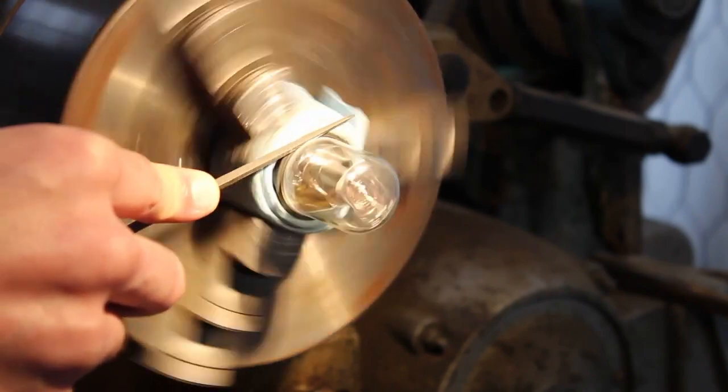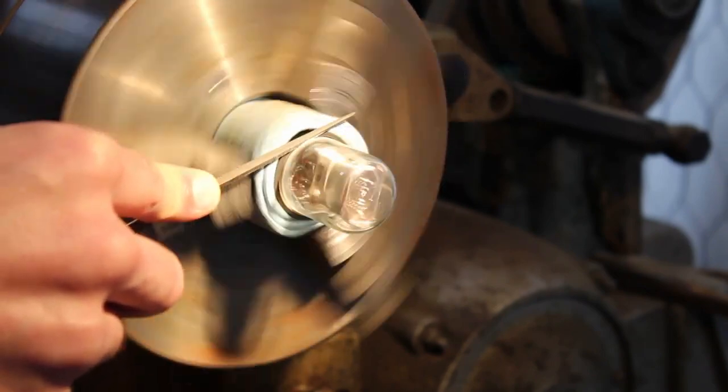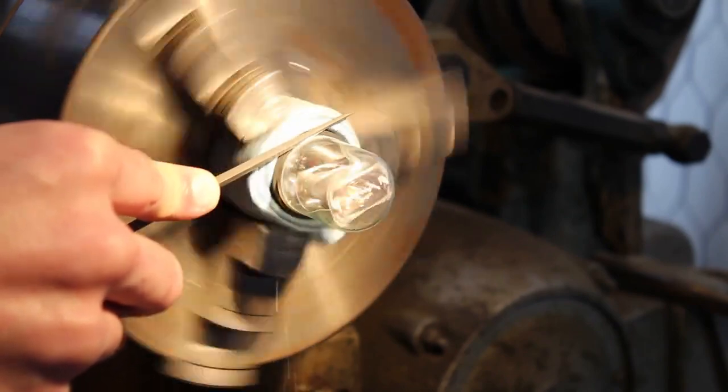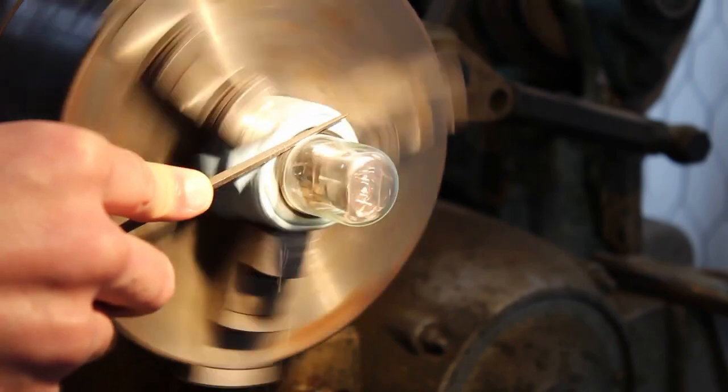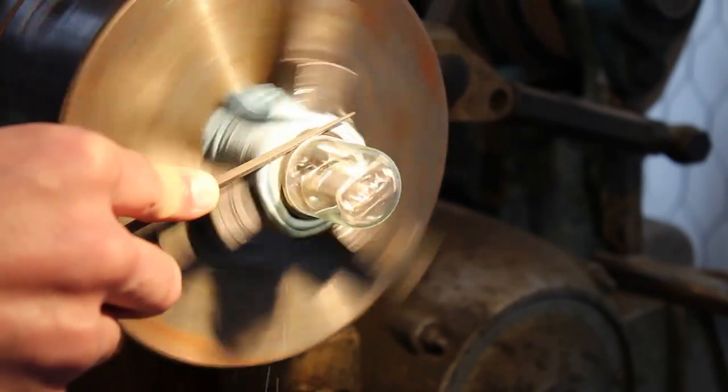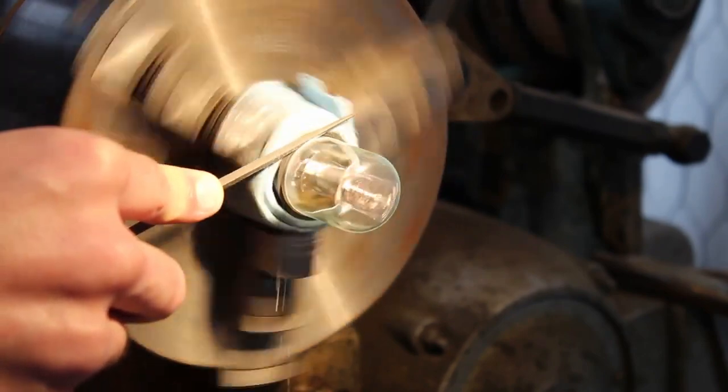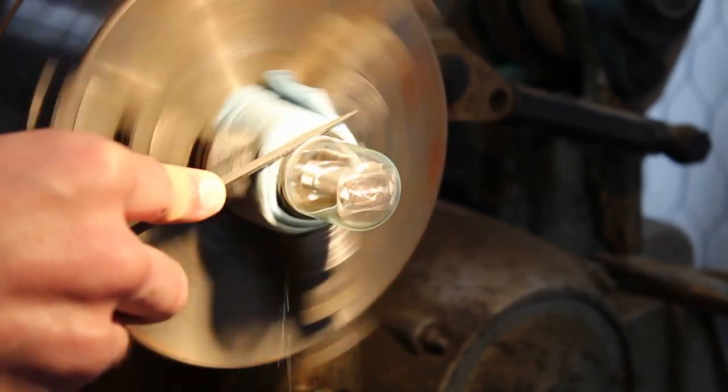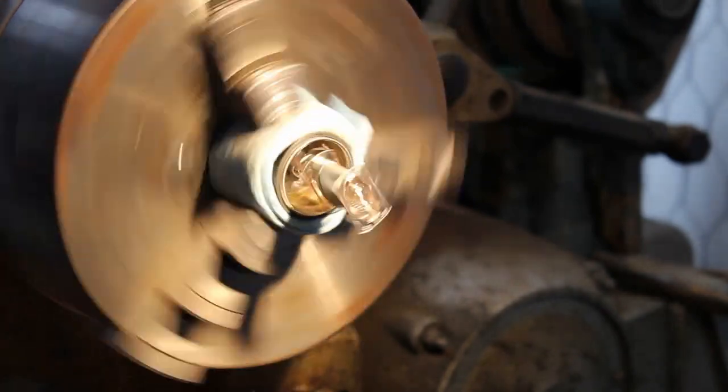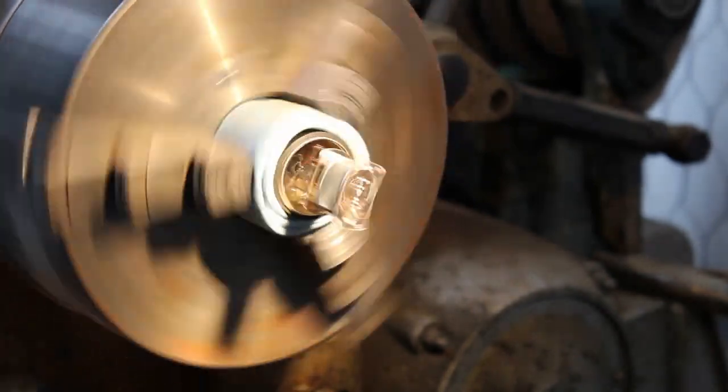So I'm just using a really small file and I'm holding this file against the glass while it slowly rotates and letting the file just slowly cut a groove into the glass. And sure enough after a short amount of time it slices right through the glass and comes off without shattering anything.